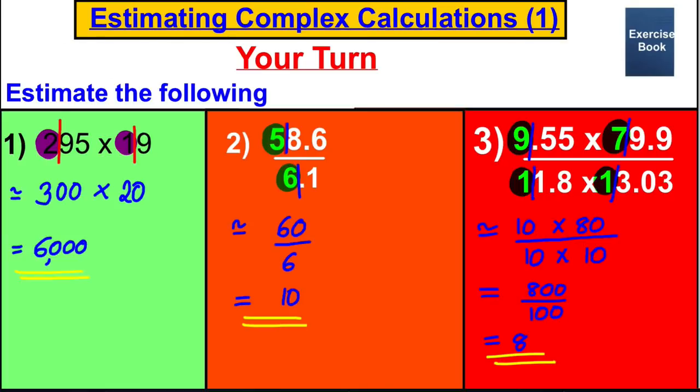So I wanted you to estimate those answers by rounding to one significant figure and then working out. Here are my answers. The first one, I approximated as 300 multiplied by 20, which was 6,000. The second one, I approximated as 60 divided by 6, which was equal to 10. And the last one, I approximated as 800 divided by 100, which was equal to 8. And that's all for this video. I hope you found it useful in your revision. Thanks for watching.